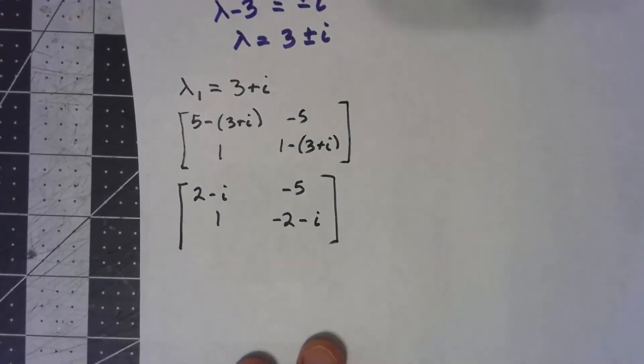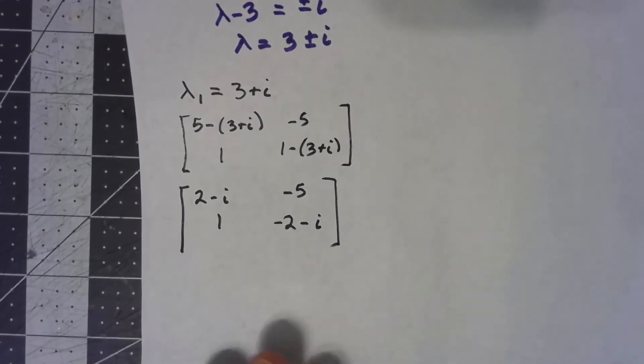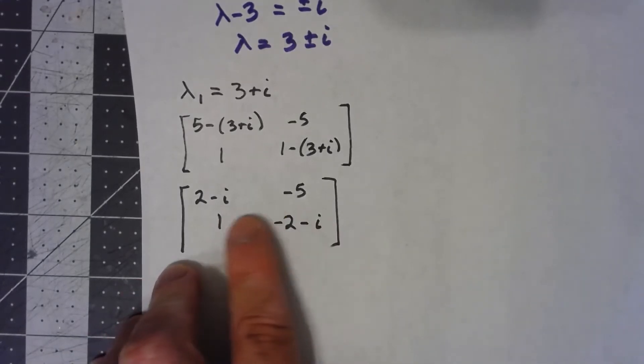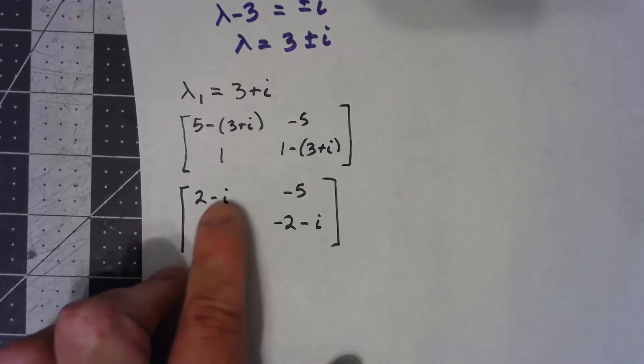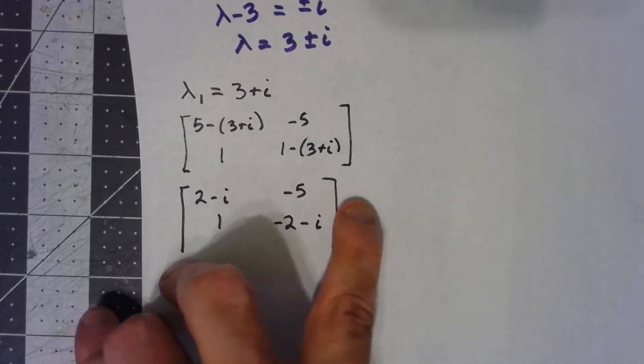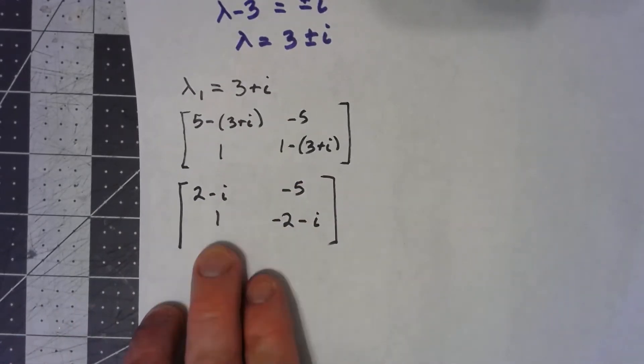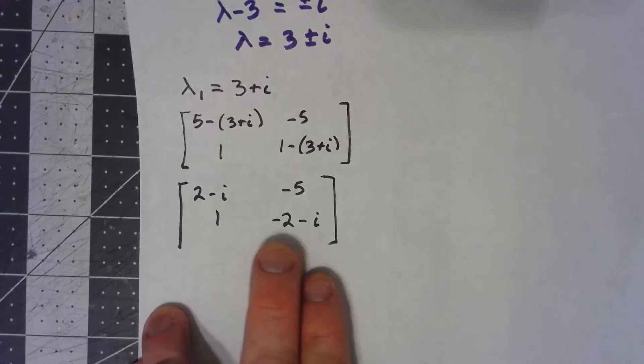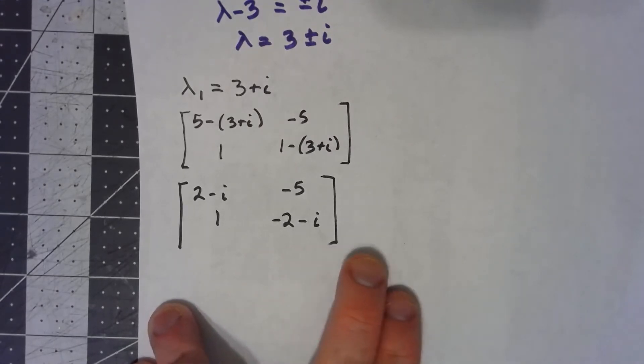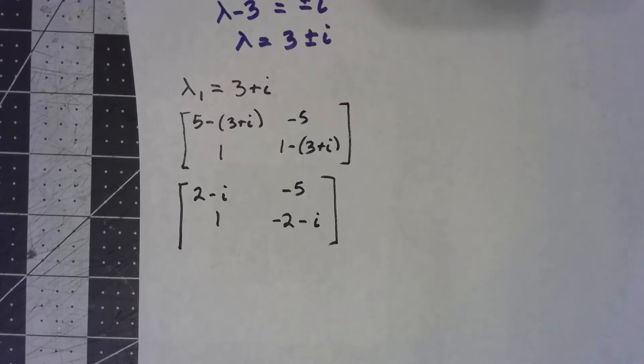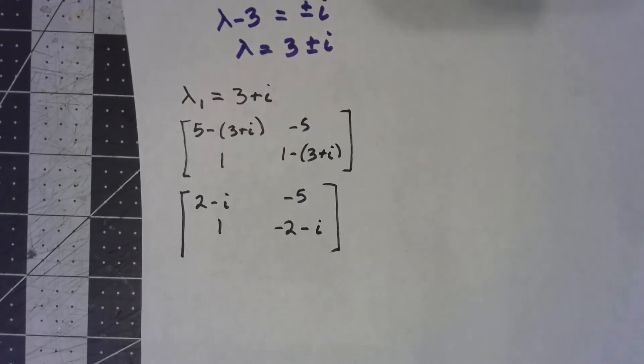It isn't obvious here, but actually, these two equations, remember, we would go ahead and say each one of these things is 2 minus i x1 minus 5 x2 equals 0, and 1 x1 plus negative 2 minus i x2 equals 0. Because of the complex numbers, it isn't obvious, but these are actually just multiples of each other.